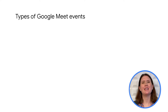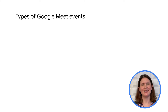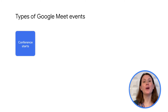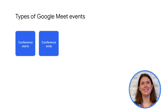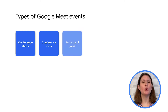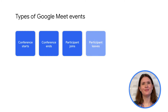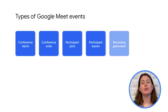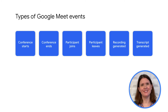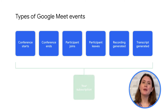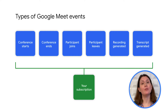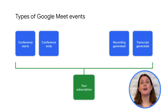The Google Workspace Events API currently supports the following types of events in Meet: when a conference starts or ends, when a participant joins or leaves, and when a meeting transcript or recording is generated. You specify the types of events that you want to receive when you create a subscription, and your subscriptions can specify as many event types as you need depending on the use case of your app.